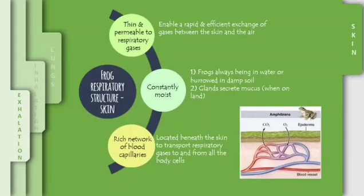First, I will explain the respiratory structure of the skin. There are three main characteristics that enable the skin to be the main respiratory organ of frogs. The first one is the skin is thin and highly permeable to respiratory gases. This enables a rapid and efficient gaseous exchange between the skin and the air.